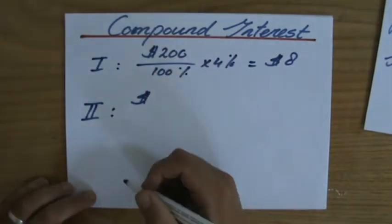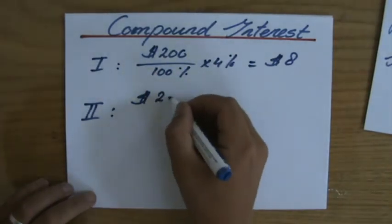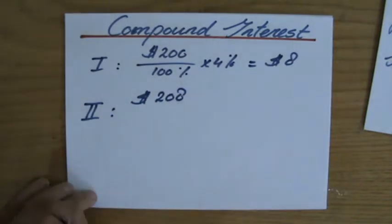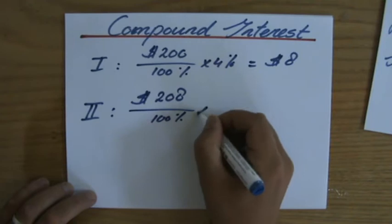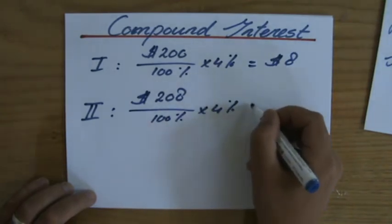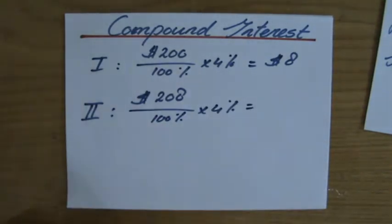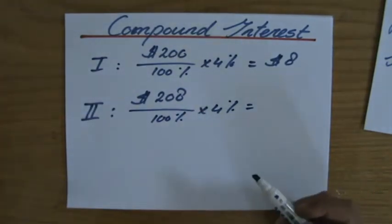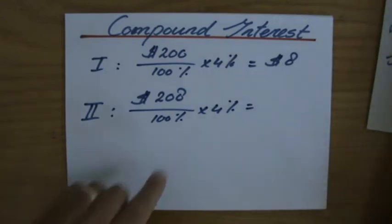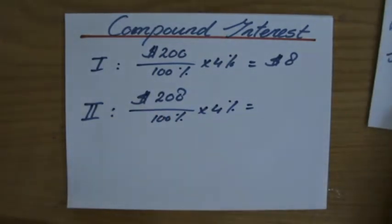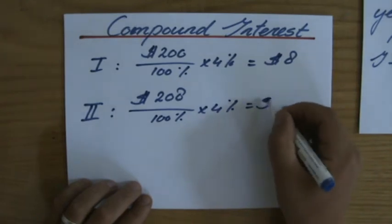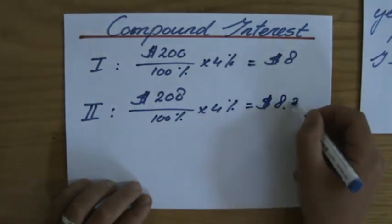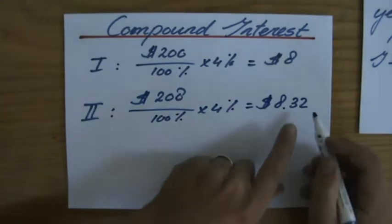Now I'm going to get 4% over $208, which is slightly more than $200, so my interest also will increase. $208 divided by 100—that is 2.08—times 4, that is $8.32. So a slight increase, but still an important increase.